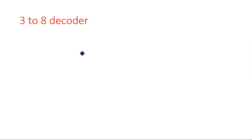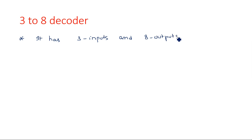In this video I am going to explain about the 3-to-8 decoder, also known as the three line to eight line decoder. It has three inputs and eight outputs. The purpose of a decoder is to decode any information which has been encoded during transmission back into its original format. Three bits of information will give eight bits of information as output.